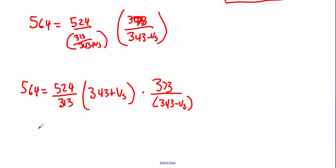Now we can get rid of a bunch of this. So 524 divided by 313 is 1.67. And I'm going to divide that over, so 564 divided by 1.67 gets me 336.9. So now I have 343 plus v_s times 373 over 343 minus v_s. Now it's just algebra.